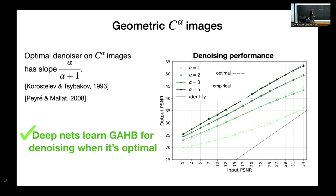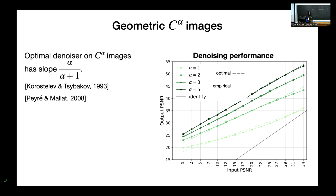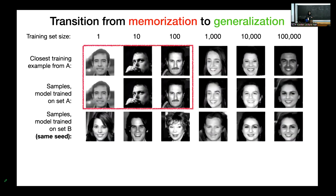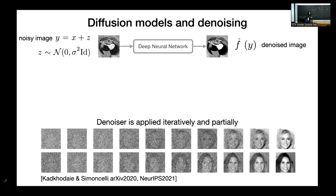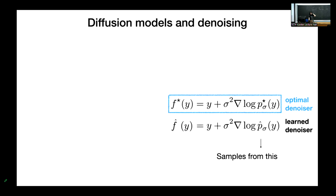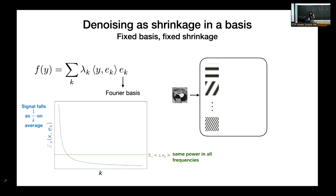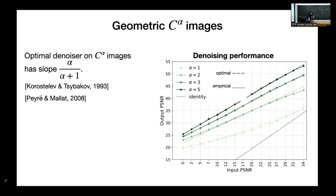Quick clarifying question from the audience: how was the network learned to represent the basis? It's just a denoiser — trained only on C-alpha images with mean square error loss, trained on all different levels of sigma (noise standard deviation).